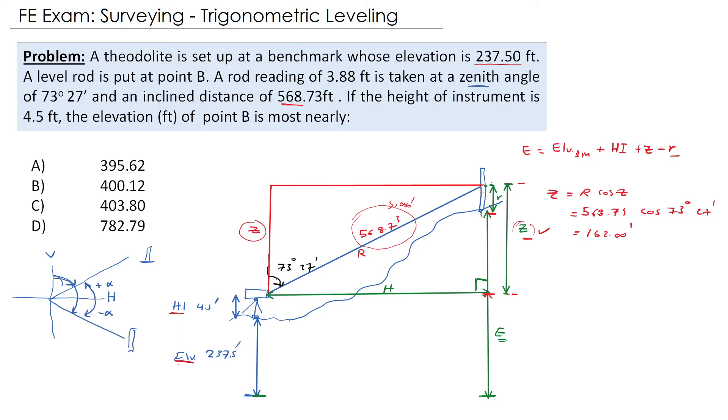The reading also we have, which is 3.88. So simply the elevation of point B equals 237.5 plus 4.5 plus 162.00 minus 3.88, and that would be 400.12 foot.